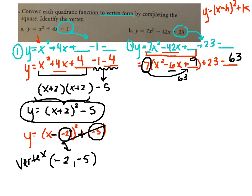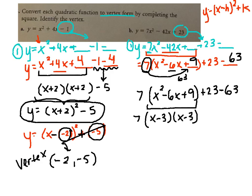So we have 7. I'm going to rewrite this: x squared minus 6x plus 9 plus 23 minus 63. Now we can factor these three terms. So we have 7 out front. These would factor to x minus 3 times x minus 3. And then 23 minus 63 turns into negative 40.